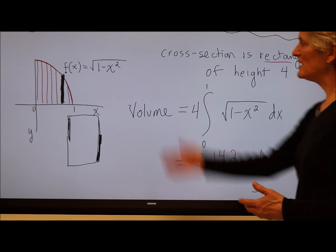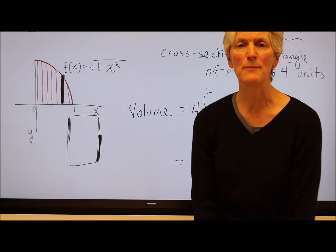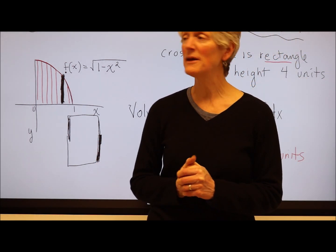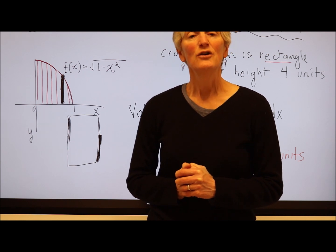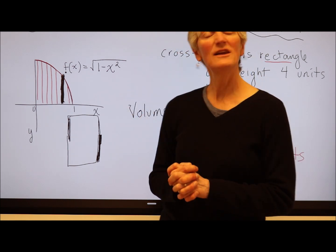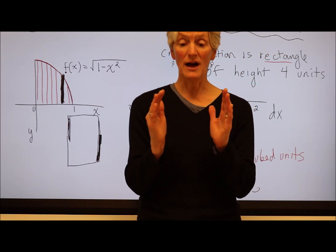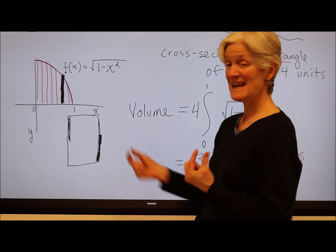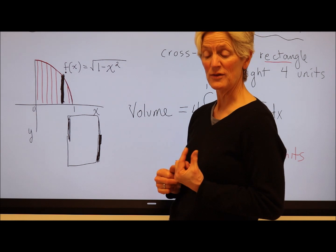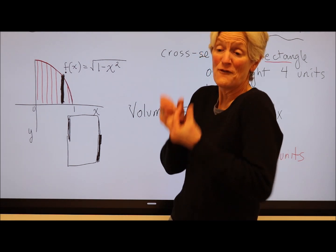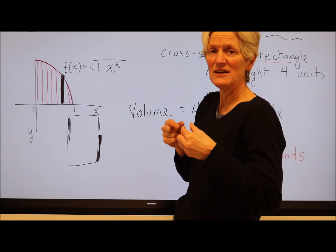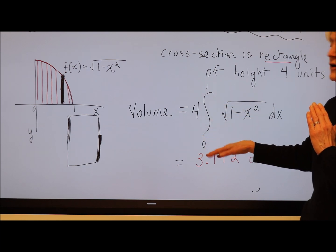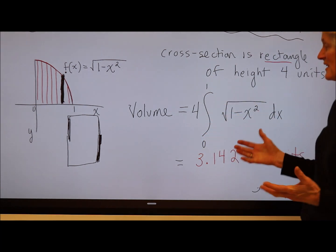Now, I could build a solid with a cross section of any shape. Maybe it would be a semi-circle. Maybe it would be an isosceles triangle. Maybe it would be an equilateral triangle. But your mission is always the same. You find the area of whatever your cross section is, multiply that by that dx, or dy if you're doing it with respect to y, to get the volume of that infinitely thin slice. Add up all the slices you have, and take the integral on your interval. That's going to give you your volume.